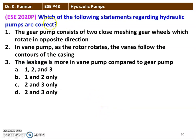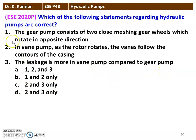Next question from the 2020 question paper: Which of the following statements regarding hydraulic pumps are correct? Statement one: the gear pump consists of two closely meshing gear wheels which rotate in opposite directions. Statement two: in a vane pump, as the rotor rotates, vanes follow the contour of the casing. Statement three: leakage is more in the vane pump compared to the gear pump. The correct answer is statements one and two. Statement three — that leakage is more in the vane pump compared to the gear pump — is wrong.